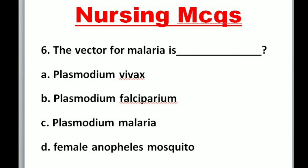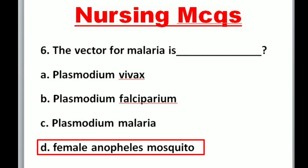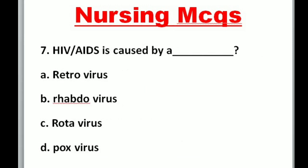Question 6: The vector for malaria is — A. Plasmodium vivax, B. Plasmodium falciparum, C. Plasmodium malaria, D. Female Anopheles mosquito. Correct option is D: Female Anopheles mosquito.